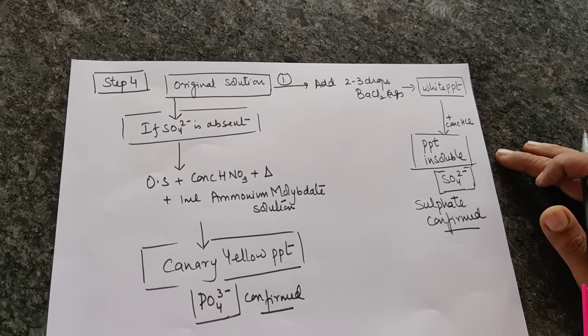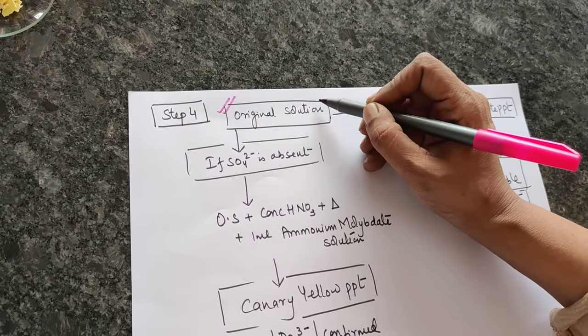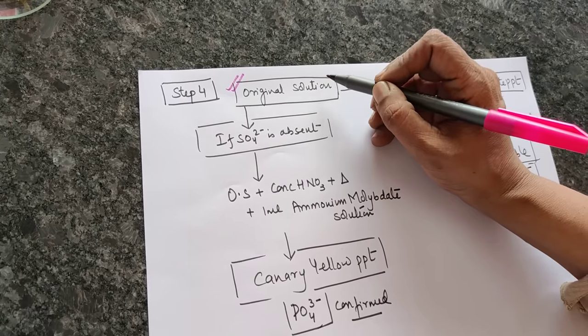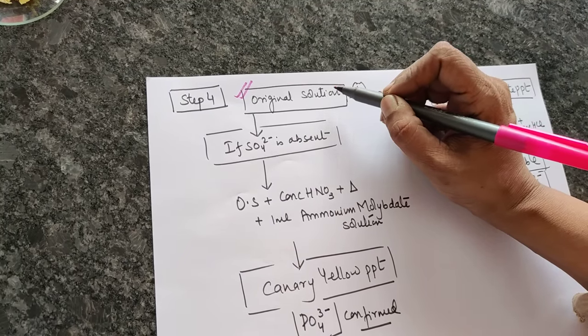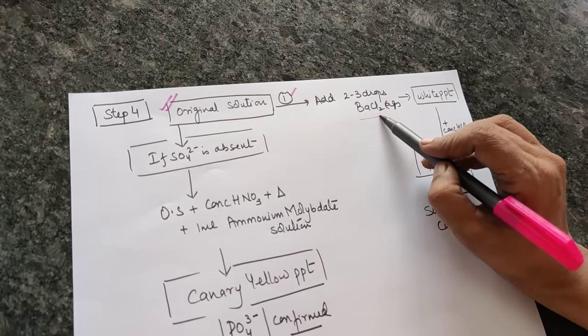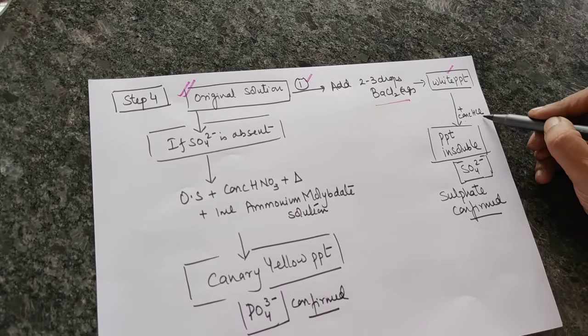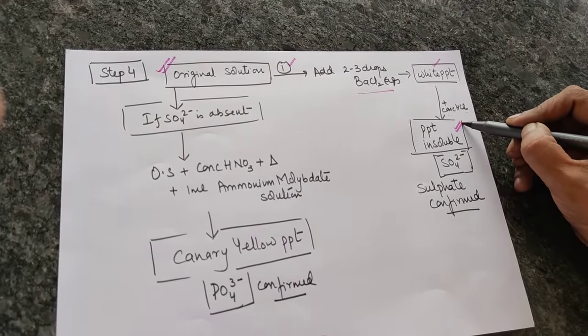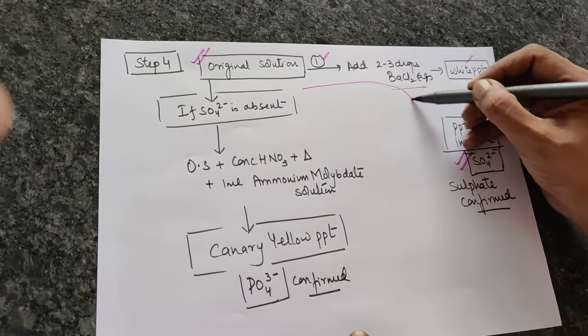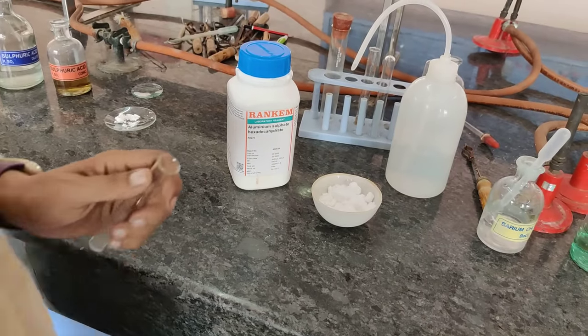Going on to step four - you will now take the original solution. In step four, we don't use salt. In step two we use salt, in step three we use salt, but for step four you have to use the original solution. What is the original solution? Salt plus water. In that solution, first step is to add two to three drops of barium chloride solution. You will get a white precipitate. If you get a white precipitate, then you will add concentrated HCl to it, and the precipitate should remain insoluble - it should not dissolve. That will confirm sulfate. So in step four, the first route is to check for sulfate first of all.